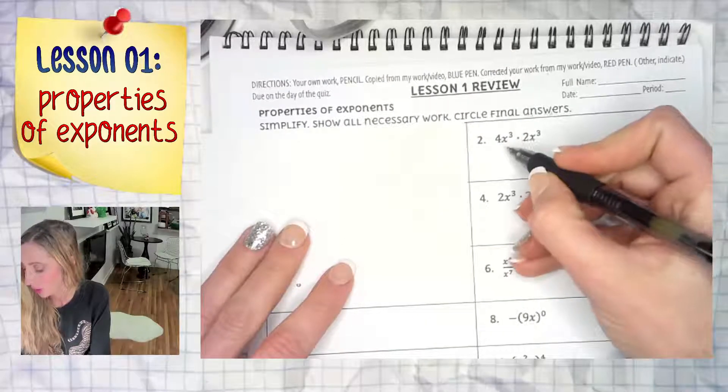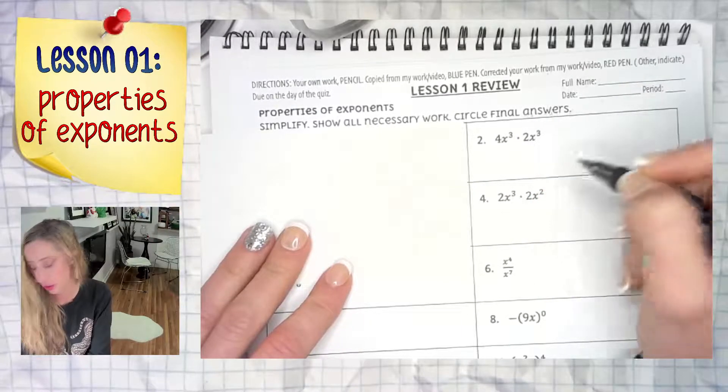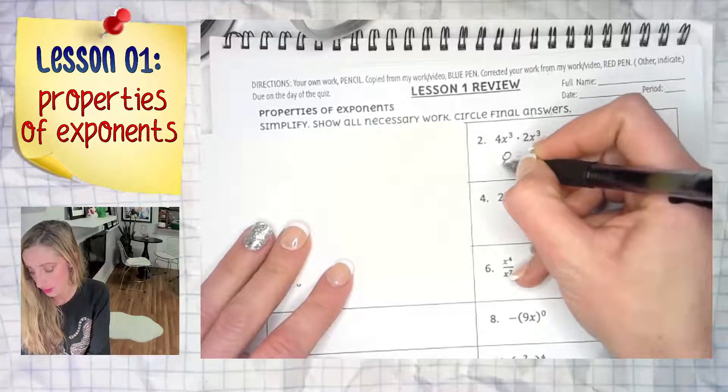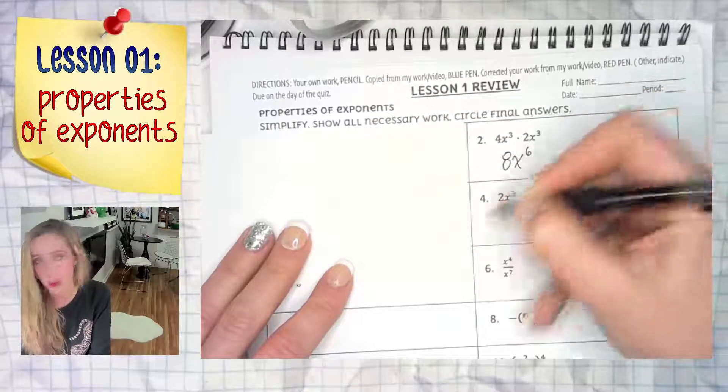Here in this example, we are going to multiply 4x to the third power and 2x to the third power. In a nutshell, we could just jump right to the answer being 8x to the sixth power, and we could call it a day.